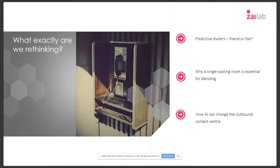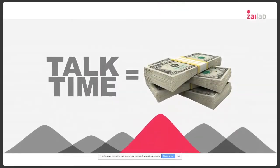Let's look at what we're going to be speaking about this week. We're rethinking the outbound contact centre space, and there are three areas we want to focus on. First, what type of dialer is appropriate for which environment — and when is a predictive dialer your friend, and when is it actually hurting your business? Second is blending within the contact centre, and why we believe a single waiting room or universal queue is essential. Third, we'll move on to the exciting topic of AI.